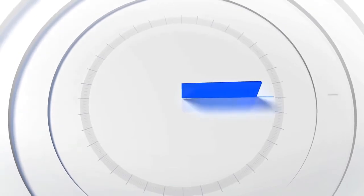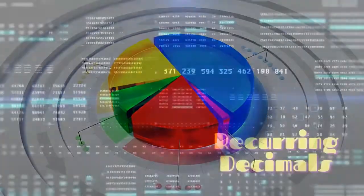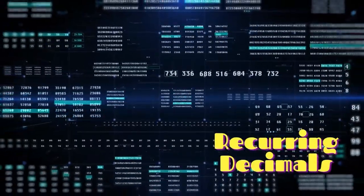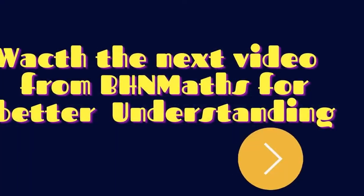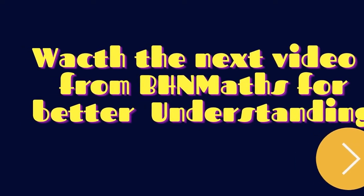You have pi and all sorts of numbers that are irrational numbers. Now, as you know, recurring decimals are rational numbers. I want you to watch this next video from BHN Maths for better understanding.